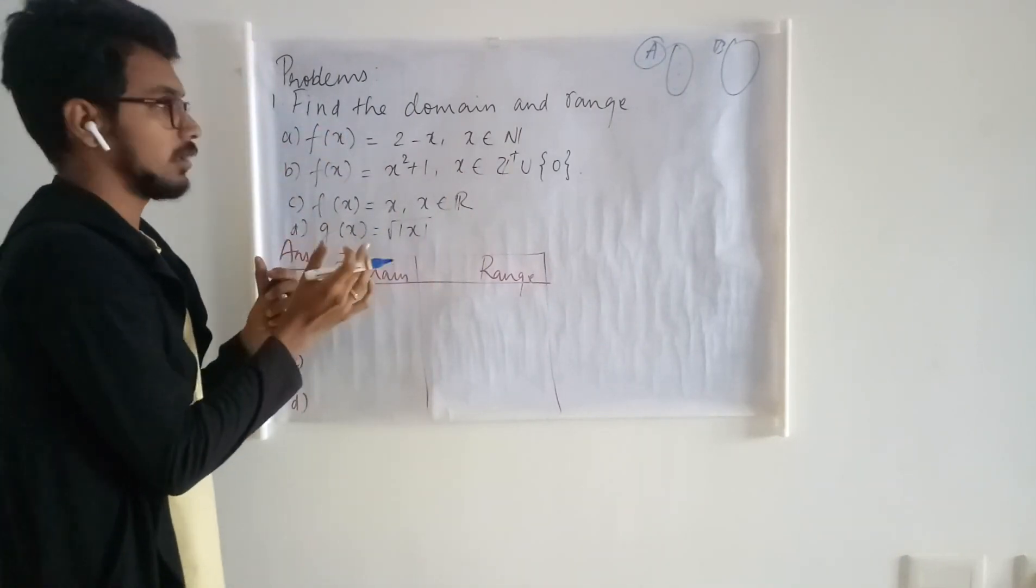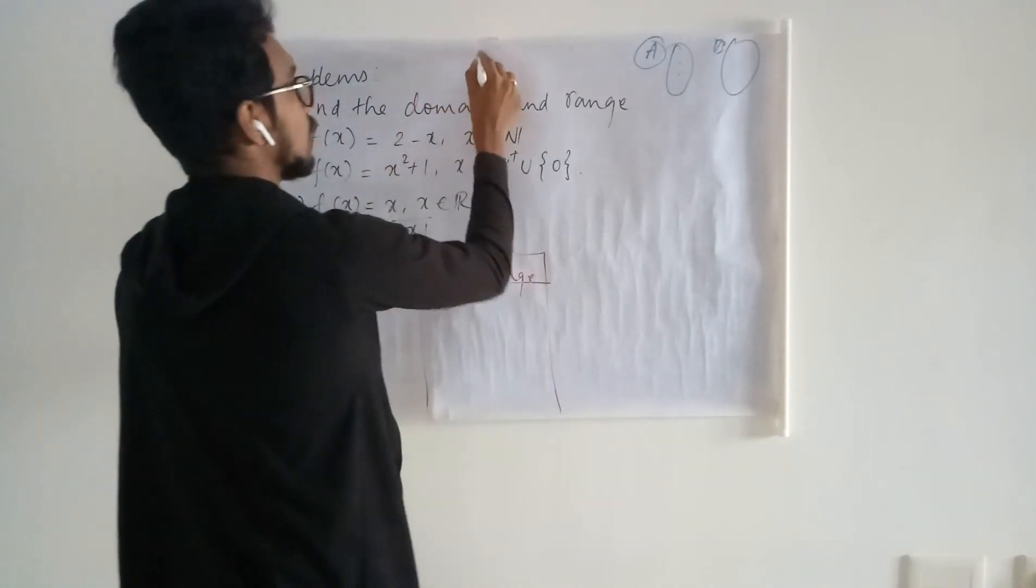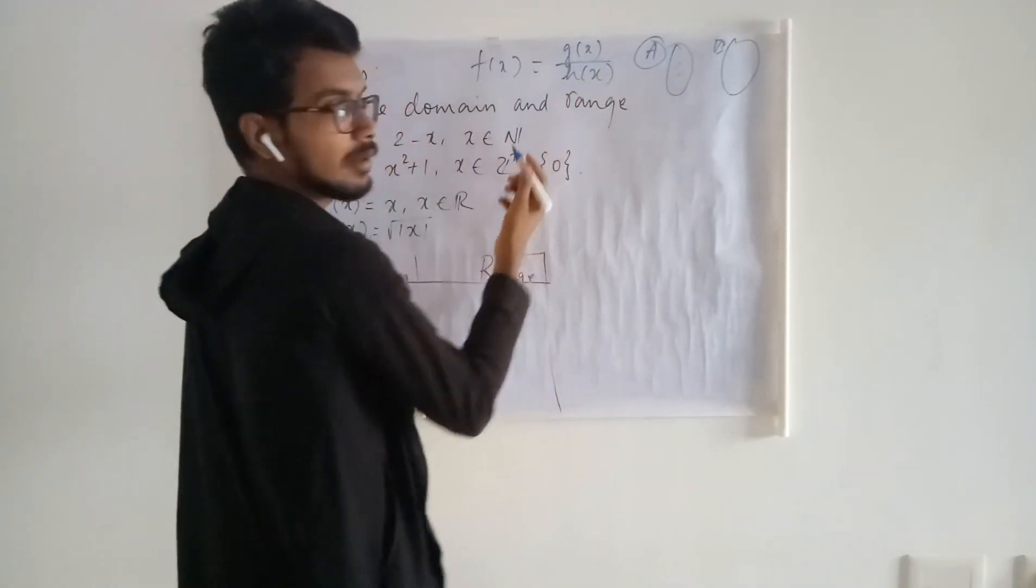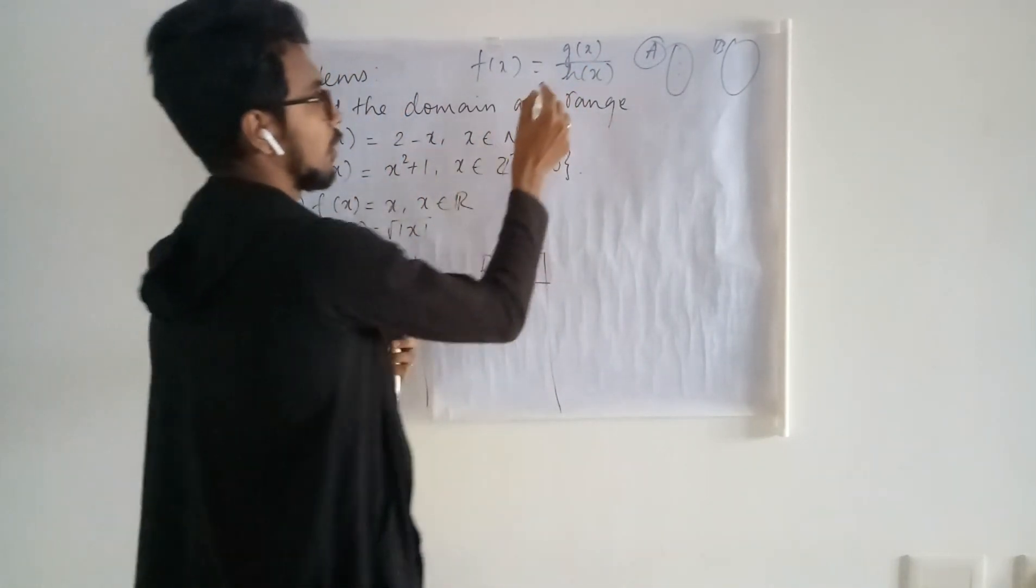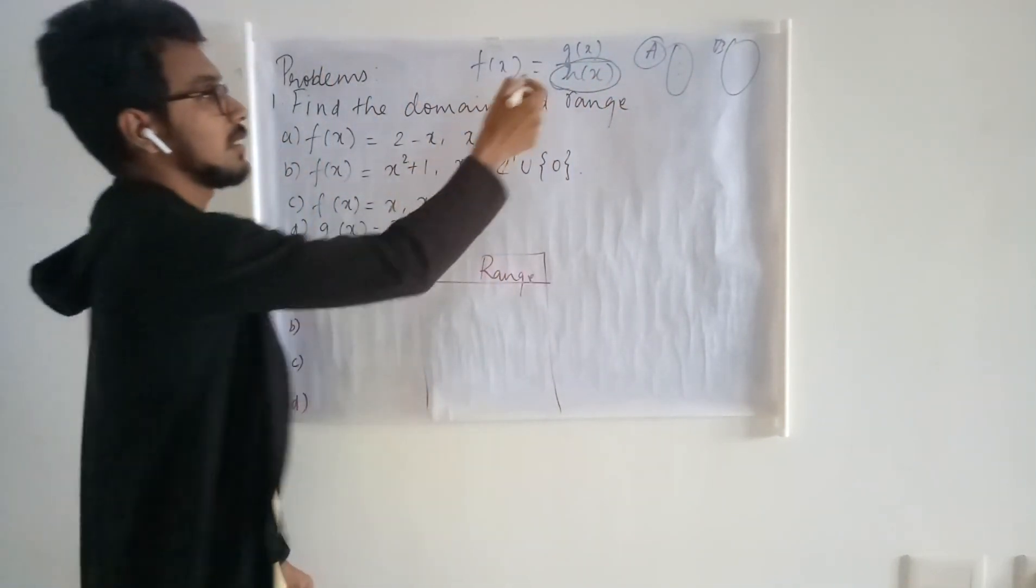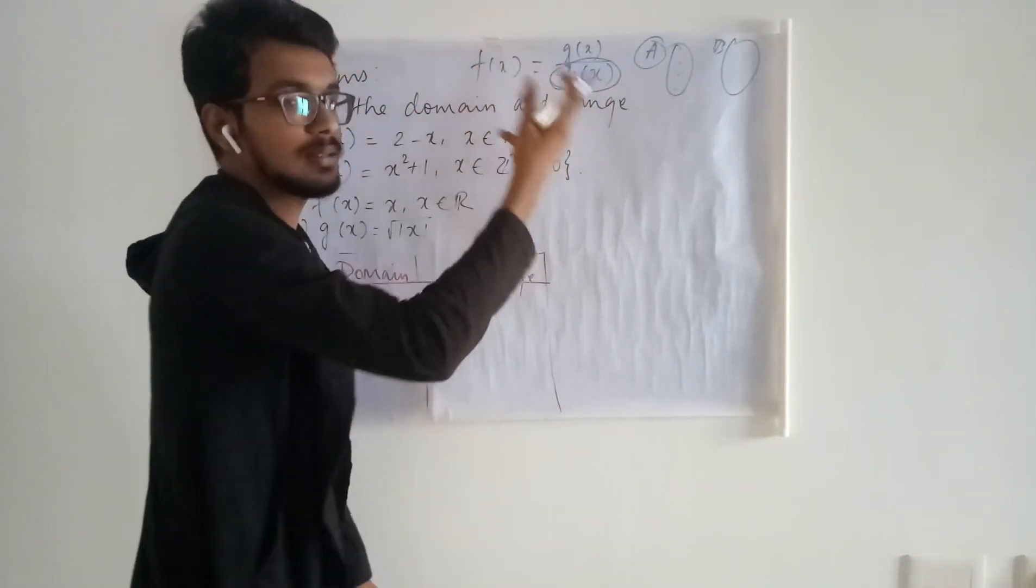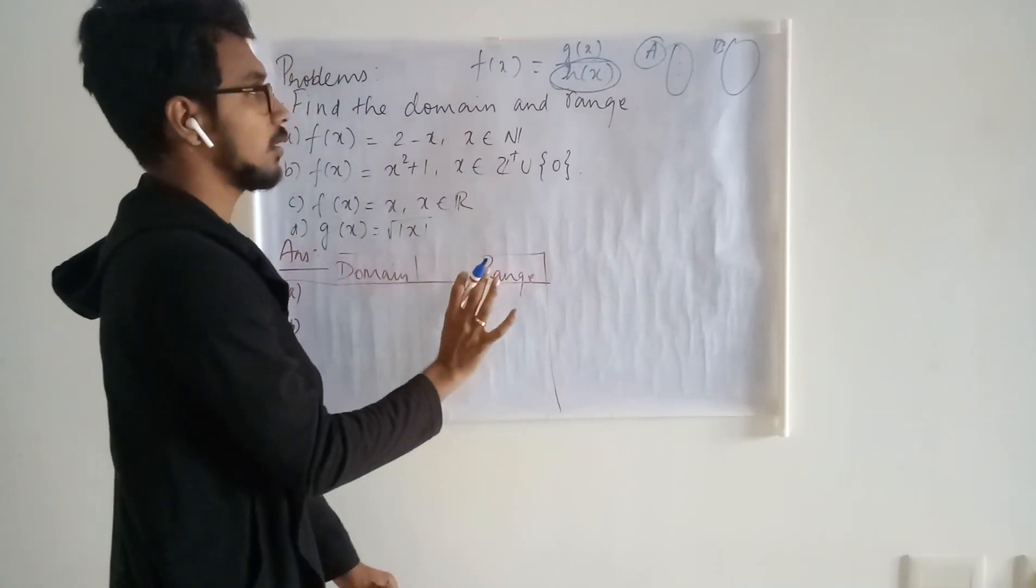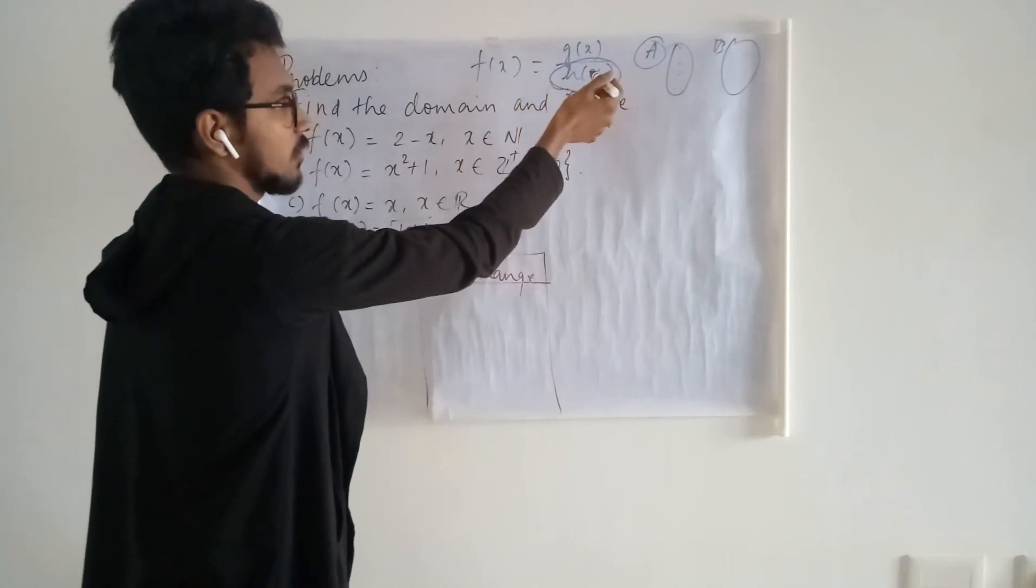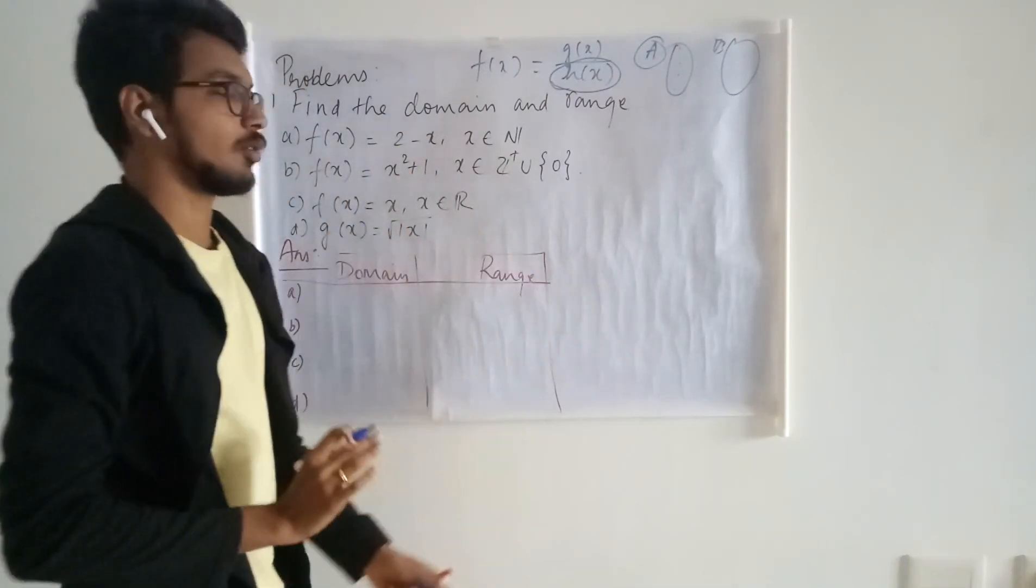Whenever we are given some rule and we are asked to find out the domain, we have to check whether this function is in rational form or not. If it is in the rational form, we need to look at the denominator and identify the points where the denominator part vanishes, because at those points the function value does not exist. That is where we need to use rational functions to find the points that have to be excluded from the domain.